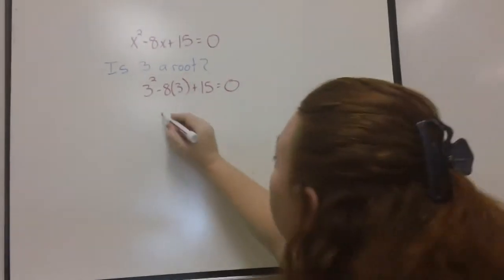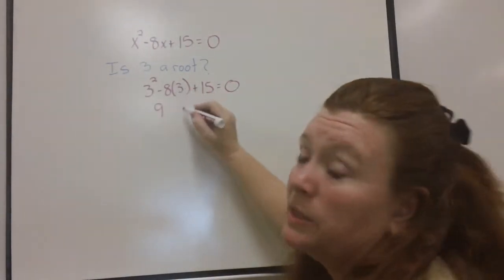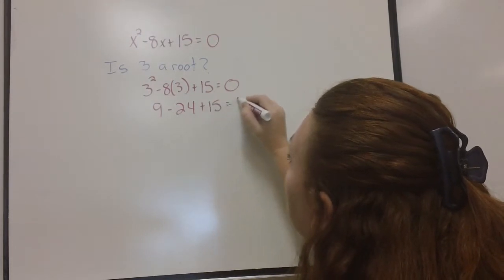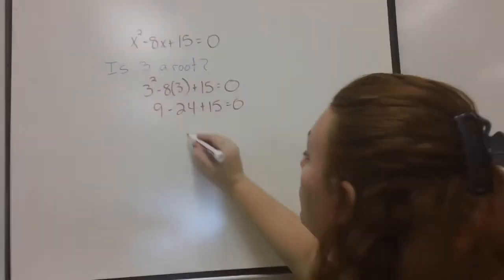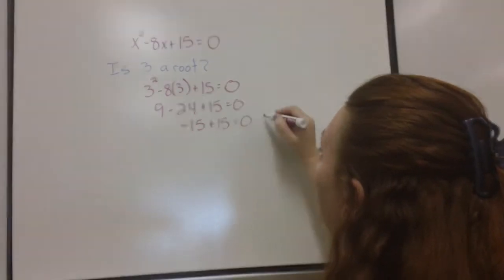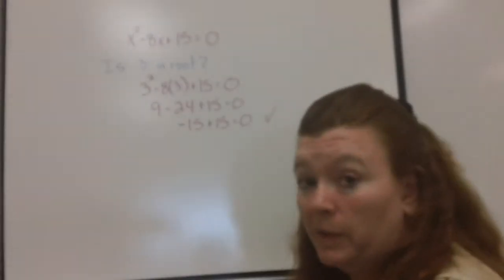Three squared minus eight times three plus fifteen equals zero. Three squared is nine. Eight times three is twenty-four. Nine minus twenty-four is a negative fifteen. Yes, it worked. So, three is a root.